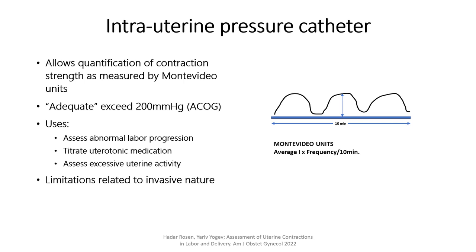The intrauterine pressure catheter allows quantification of contraction strength as measured by Montevideo units, which represent the sum of the amplitude of each contraction over a 10-minute period. Adequate labor contractions have been defined by ACOG as exceeding 200 mmHg, yet different studies refute this cutoff.